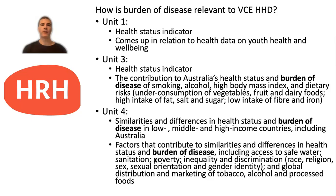This slide is looking at how burden of disease is relevant across Unit 1 to 4 HHD. It pops up in Unit 1 as a health status indicator at the start of area of study 1, and also comes up in relation to understanding health data on youth health and well-being. Across Unit 3 to 4 it pops up quite a few more times. It's also a health status indicator at the start of Unit 3, and you're looking at the contribution to Australia's health status and burden of disease of a range of different factors towards the end of area of study 1. For example, you need to be able to link how smoking can contribute to Australia's burden of disease.